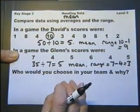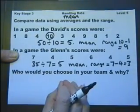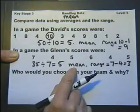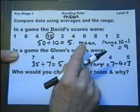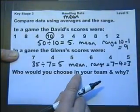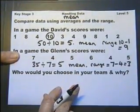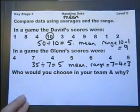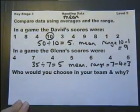There's actually no right or wrong answer to this sort of question. It's an argument you put forward. I mean, if the means had worked out different and David's mean had worked out higher, you still might choose Glenn because he's more consistent. So there's no right or wrong answer to this type of question. You just put forward an argument based on the information you have.